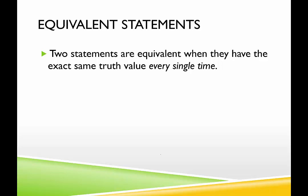Equivalent statements are two statements that have the exact same truth value every single time. So if this statement is true, this statement is true. This one's false, this one's false. The notation we use for equivalent statements looks like an equal sign with an extra bar. We would say that statement A is equivalent to statement B if they have the same truth value every single time.